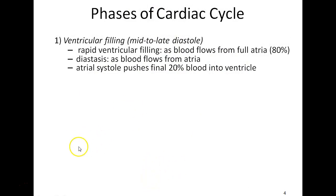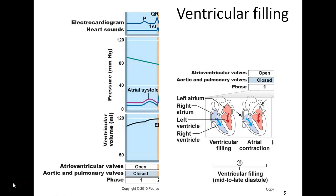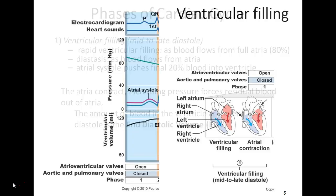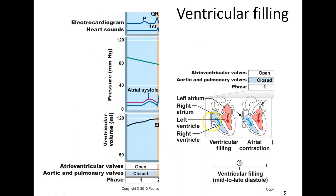Let's look at the phases of the cardiac cycle, beginning mid to late diastole. In ventricular filling, the ventricles fill with blood coming from the atria. The proper term for this passive filling is diastasis. Then there is atrial systole, which pushes the final 20% of blood into the ventricles.